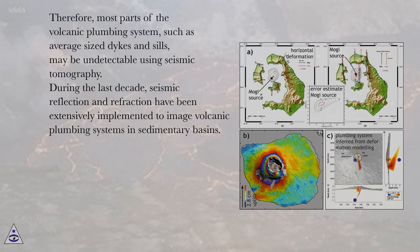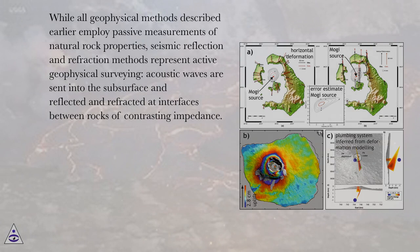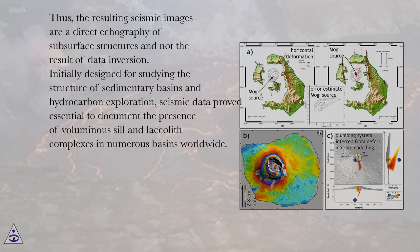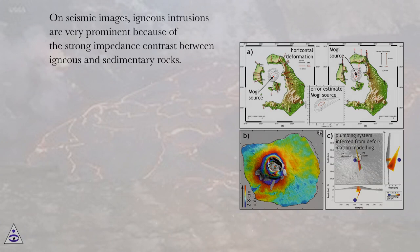During the last decade, seismic reflection and refraction have been extensively implemented to image volcanic plumbing systems in sedimentary basins. While all geophysical methods described earlier employ passive measurements of natural rock properties, seismic reflection and refraction methods represent active geophysical surveying: acoustic waves are sent into the subsurface and reflected and refracted at interfaces between rocks of contrasting impedance. Thus, the resulting seismic images are a direct depiction of subsurface structures and not the result of data inversion. Initially designed for studying the structure of sedimentary basins and hydrocarbon exploration, seismic data proved essential to document the presence of voluminous sill and laccolith complexes in numerous basins worldwide. On seismic images, igneous intrusions are very prominent because of the strong impedance contrast between igneous and sedimentary rocks.